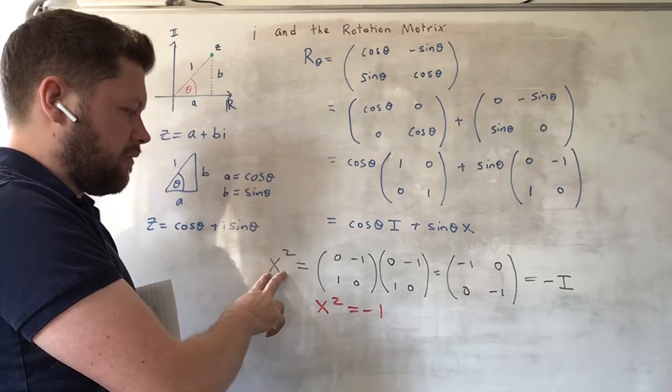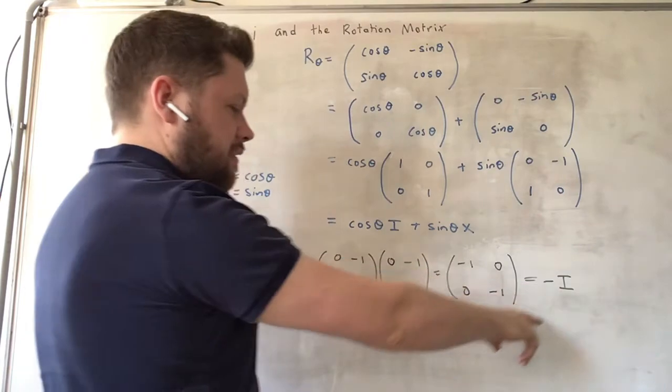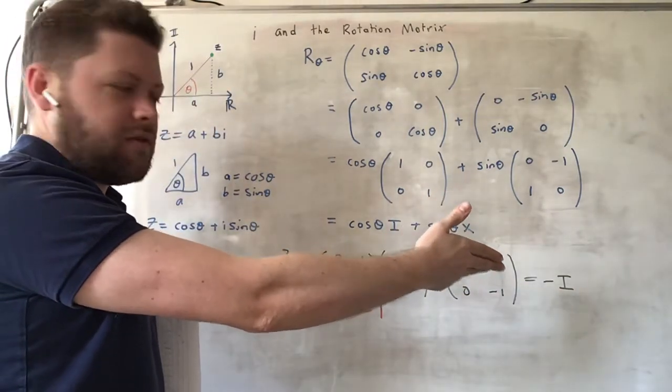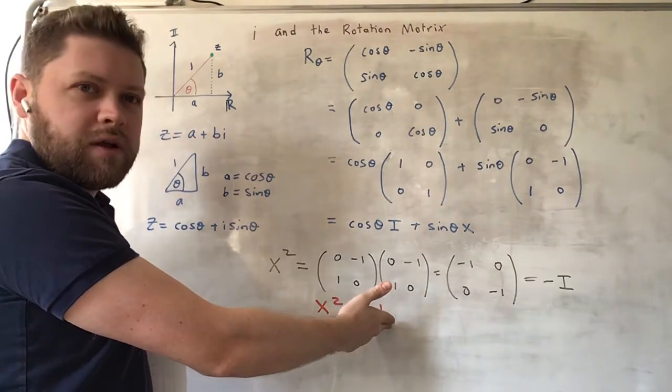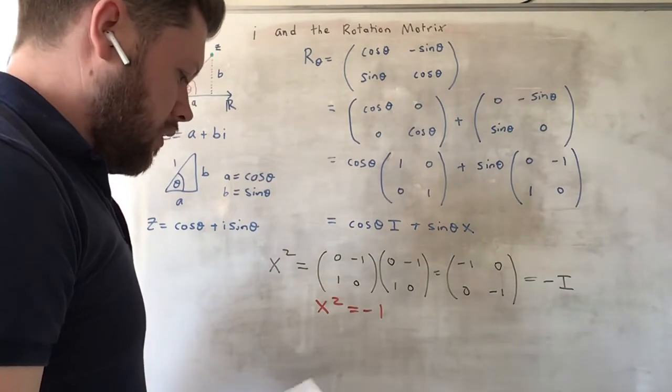It's saying that whatever matrix X is, squaring it is equal to the negative of the identity. And the identity element for matrices is the equivalent of the number, the multiplicative number 1, for regular numbers.